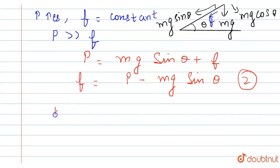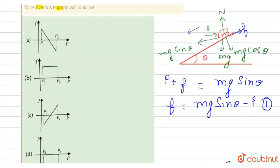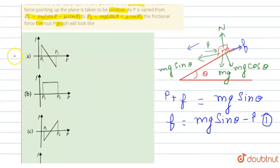From the first and second equations, we conclude that as p increases, the frictional force decreases linearly. Checking the graph options, graph A is the correct answer — it shows that as force p increases along the x-axis, the frictional force decreases linearly. I hope you understand the explanation, thank you.